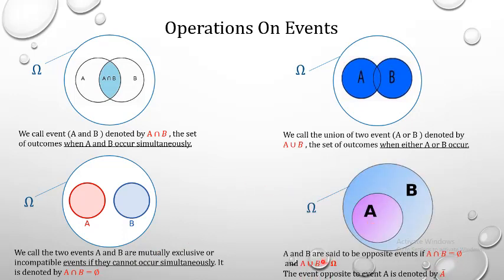The last case: A and B are opposite events if A∩B = phi — no intersection between set A and set B, and A∪B = omega. A is the opposite of B, or B is the opposite of A. The event opposite to A is denoted by A-bar. The complement of A in the universe set omega is called A-bar.